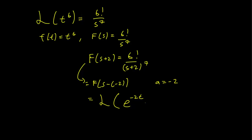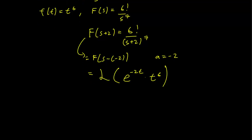e^(-2t) times f(t) which is t to the 6th. And this implies that the inverse Laplace transform of our f function is going to be e^(-2t) times t to the 6 and that really is all there is to it.